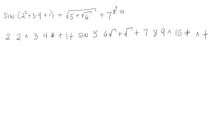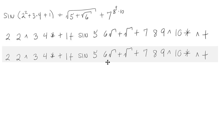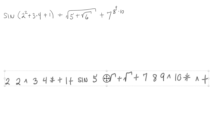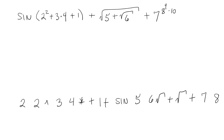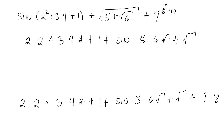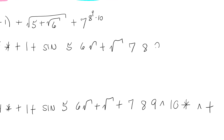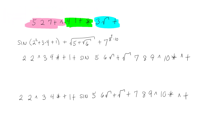Let me try this again and see if I get the same answer, because you can't just look at it and tell what it's doing easily. So: 2 and 2, square it. Then 3 and 4 — multiply them, add to the 2 squared. Then 1 — add it to the previous thing. Take the sine of it. Then 5, then 6 — square root the 6, add it to the 5, then take the square root of the whole thing. Then 7, then 8, then 9 — the 9 gets raised from the 8. Multiply by 10, raise it to the 7, and add it to the previous term. And that is exactly what I got last time — so that's a good thing.